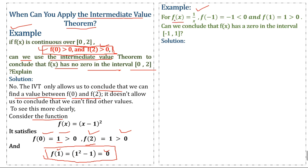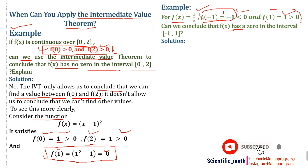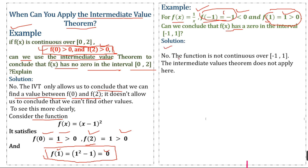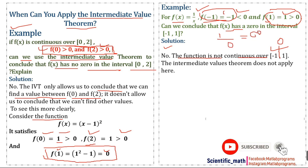Next example: consider f(x) = 1/x. We have f(-1) = -1 < 0 and f(1) = 1 > 0, so the function has opposite signs at the endpoints of [-1, 1]. Can we conclude that f(x) has a zero in this interval? No, because the function is not continuous over the interval — at x = 0, f(0) = 1/0 is undefined.